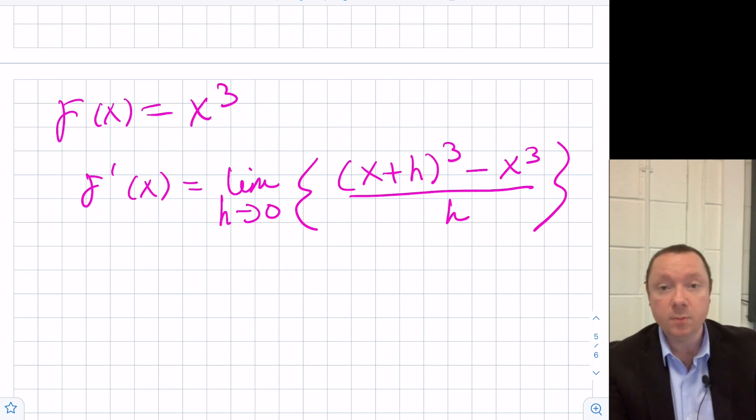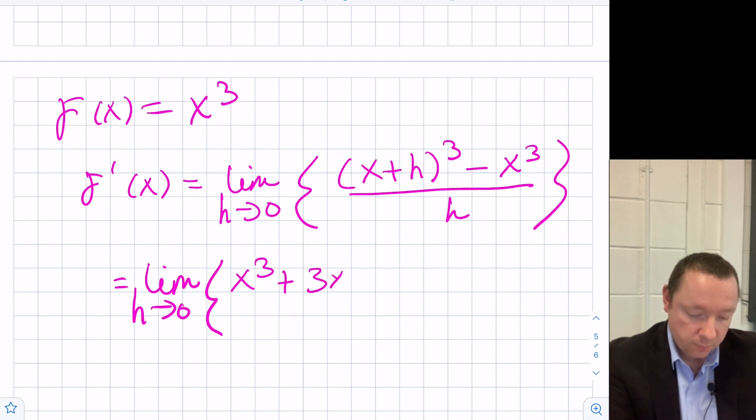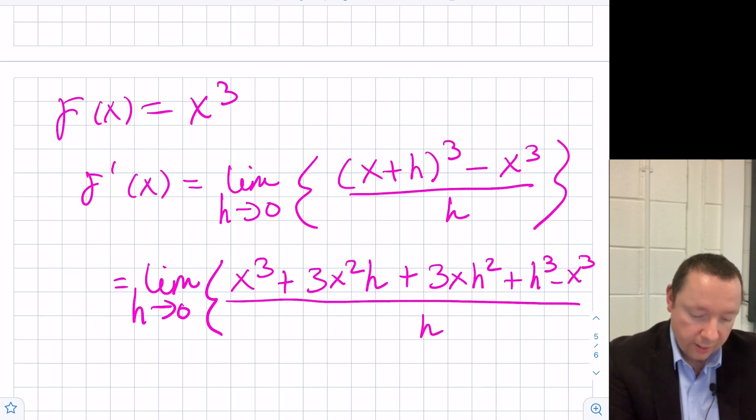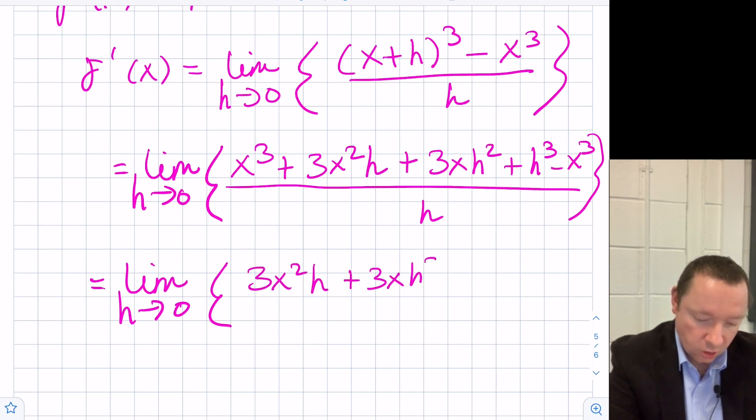Now you can take your time and expand x plus h cubed if you want, or if you know the binomial theorem or something else to expand it quick, you can. So I'm just going to expand it very quick and I get the limit as h goes to zero of x cubed and we've got minus x cubed still on the top. And again, we're trying to eliminate this fraction. So that is the limit as h goes to zero of x cubed. So I've got 3x squared h plus 3x h squared plus h cubed all over h.